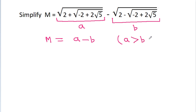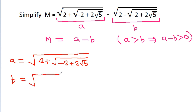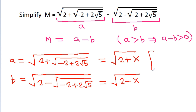Since a is greater than b, this implies a minus b should be positive. We have a = √(2 + √(-2 + 2√5)) and b = √(2 - √(-2 + 2√5)).